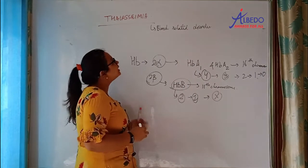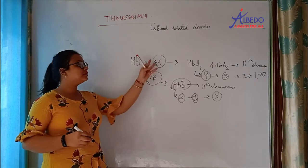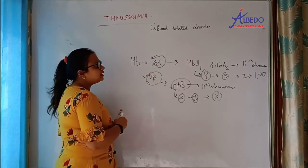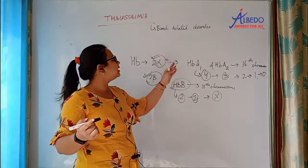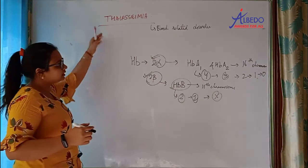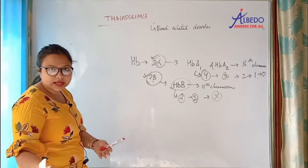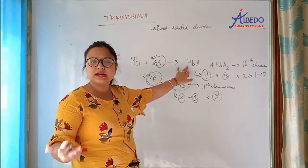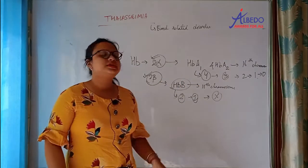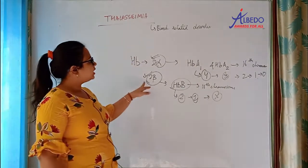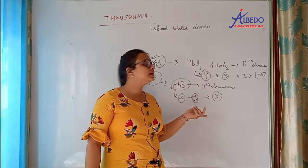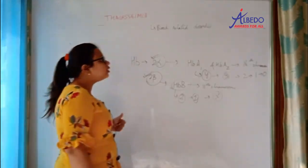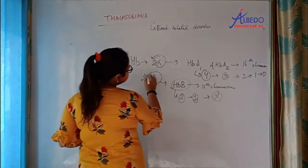So thalassemia is a disorder in which a gene or allele becomes non-functional. Beta thalassemia will be more dangerous. According to common sense, beta thalassemia will get more serious. Why? Because for beta I have only two alleles.